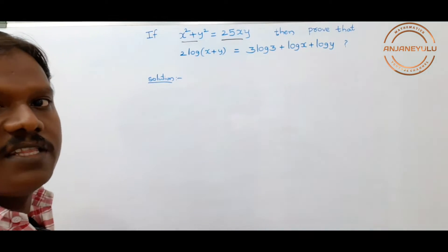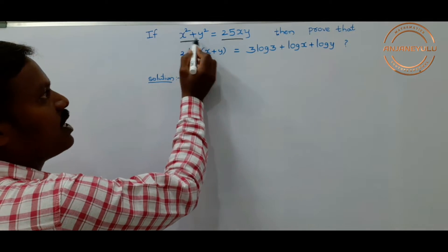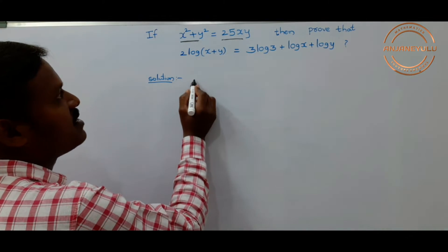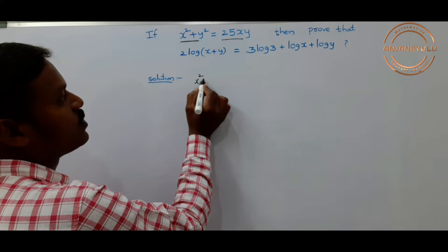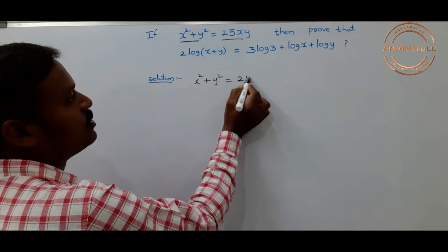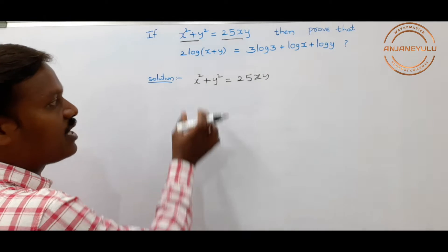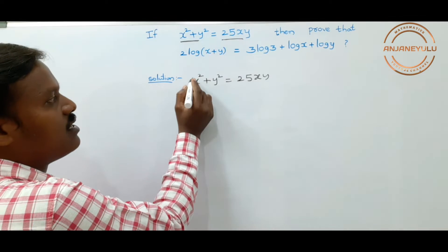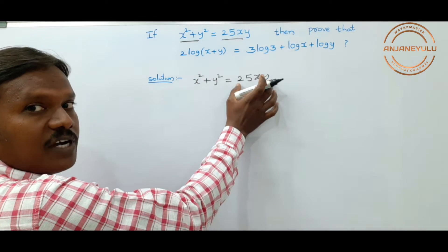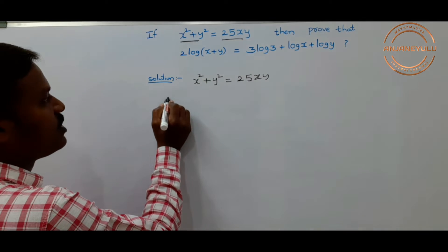What is given in this problem? x squared plus y squared is equal to 25xy. This is the given equation. In the LHS we have x squared plus y squared, and in the RHS we have 25xy. Now we will add 2xy on both sides.